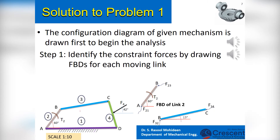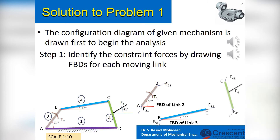Next, draw the free body diagram of link 3, that is link BC. At point B we will have a constraint force F32, and at point C another constraint force F34. Therefore link BC will be a 2-force member. Similarly, draw the free body diagram of link CD at the same angle as in the original mechanism. Point C will have a constraint force F43, and point D will have a constraint force F41. There is an applied force F4 at point E, hence link CD will be a 3-force member.